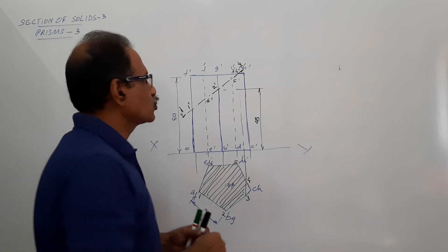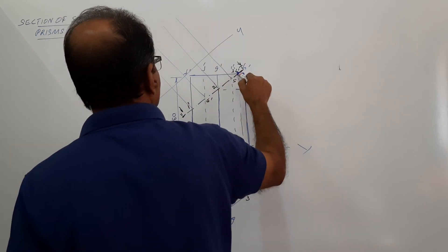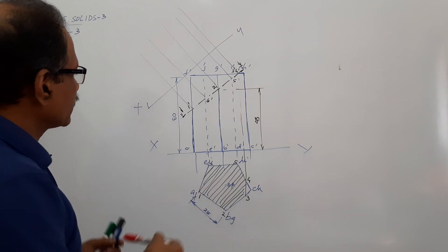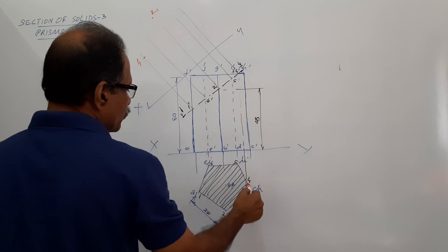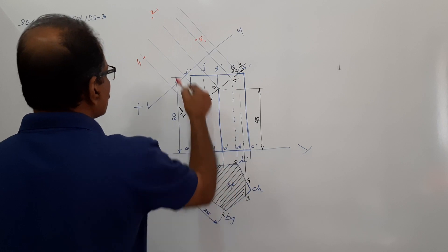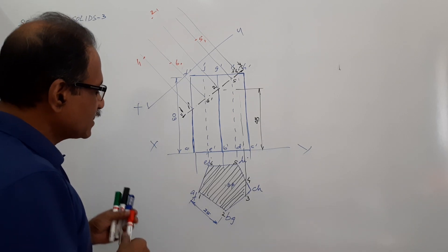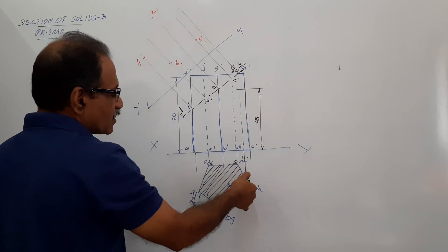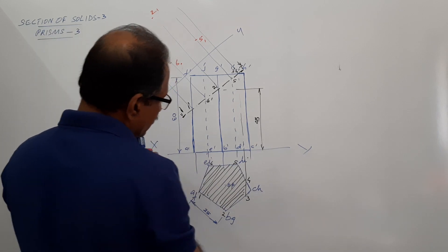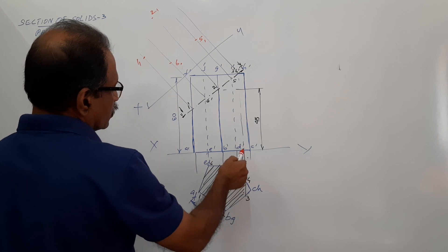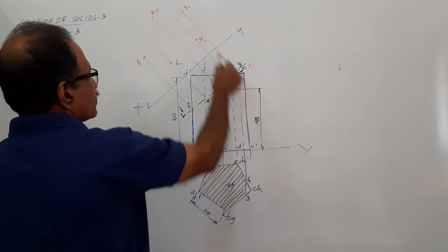Now you have to draw the true shape. You know the method: draw an X1Y1 parallel to the cutting plane. Draw projectors. On the projector through 1', take the distance of 1 from XY and mark — you get 1,1. On the projector through 2', you get 2,1. On the projector through 5', you get 5,1. For points 3 and 4 remaining — 3 is on the top face. Take this distance and mark on the projector through 3' — you get 3,1. On the projector through 4', take this distance and mark — you get 4,1.